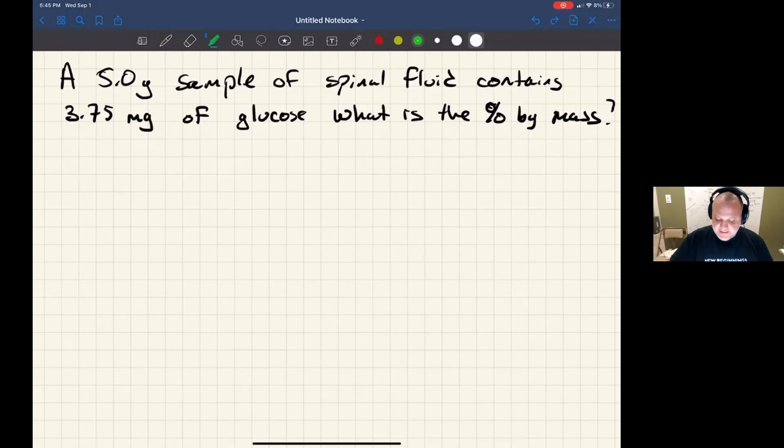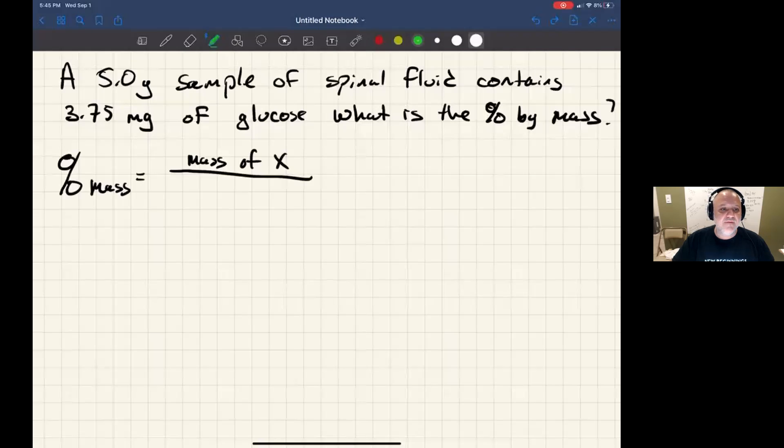Percent by mass is straightforward. You did this before with mass percent composition of elements. Any percentage is part divided by whole. If we're doing a percent by mass of a mixture, what we want to do is take the mass of our solute, or whatever it is we're thinking of, and divide it by the total mass times 100.